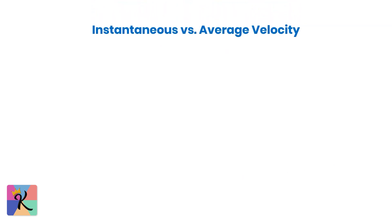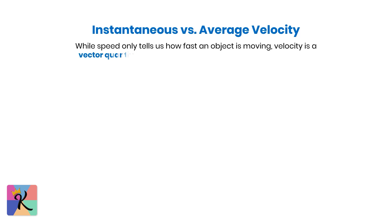Now, let's add direction into the mix and talk about velocity. While speed only tells us how fast an object is moving, velocity is a vector quantity, meaning it includes both speed and direction.